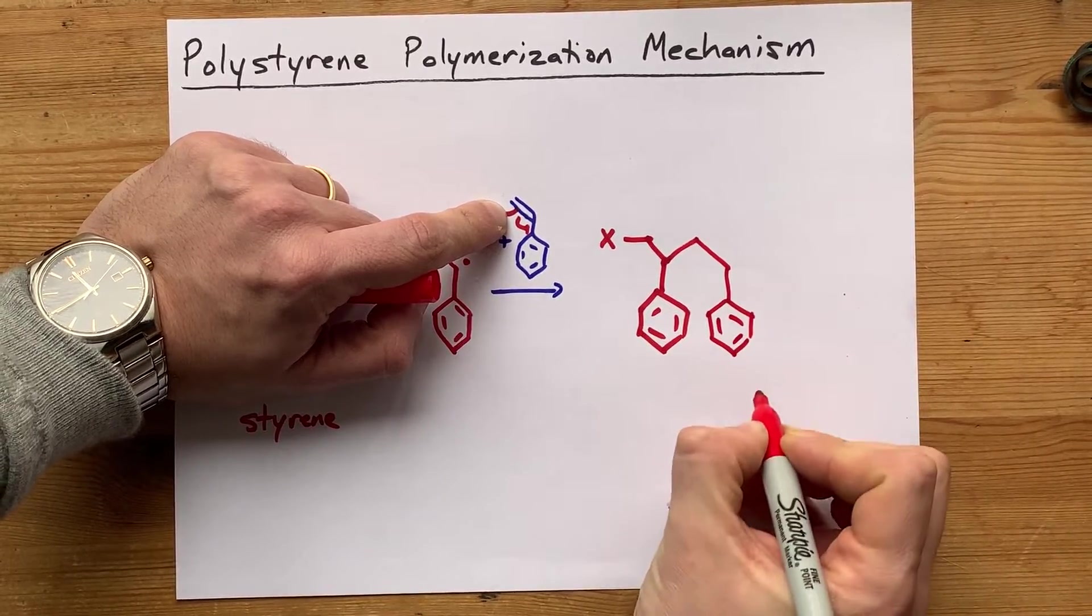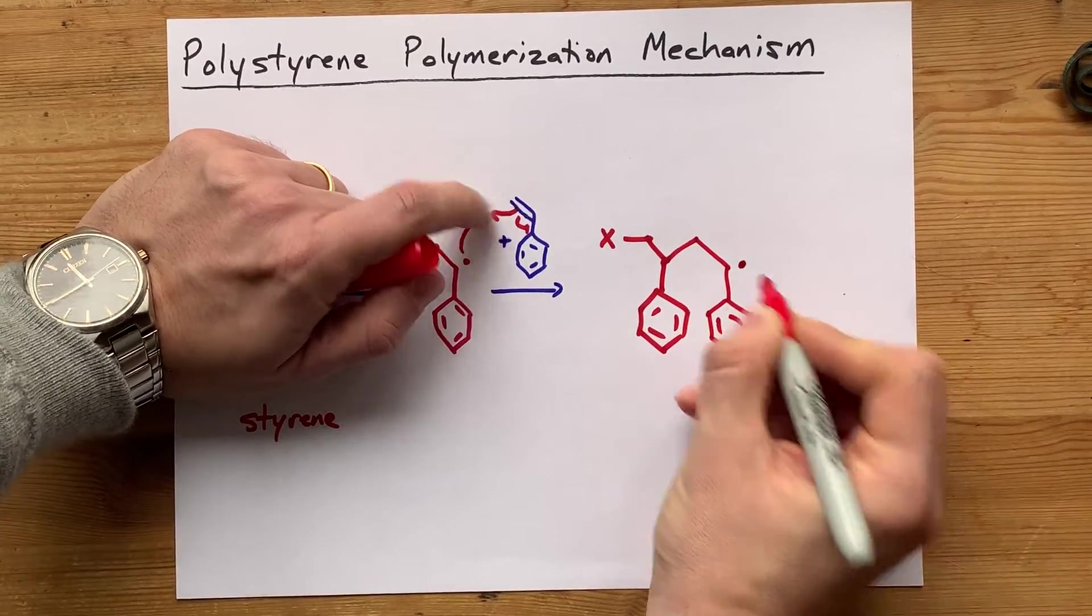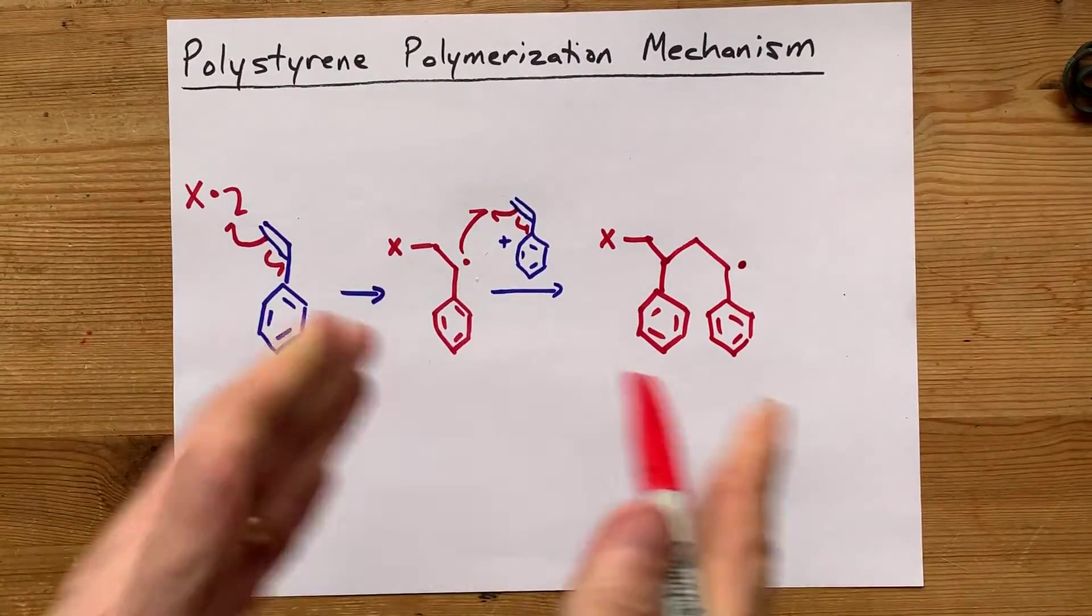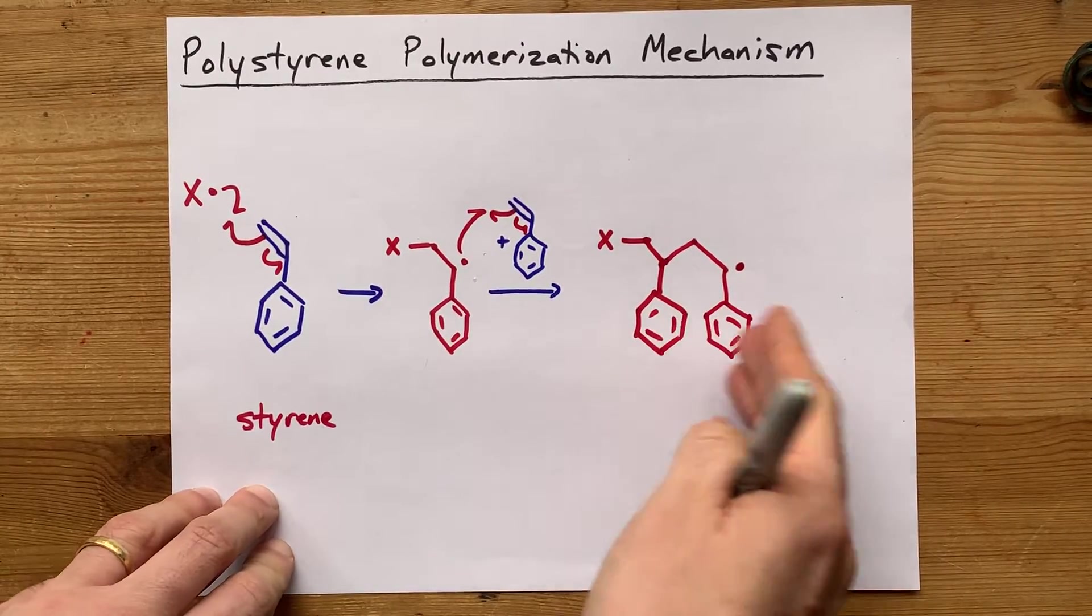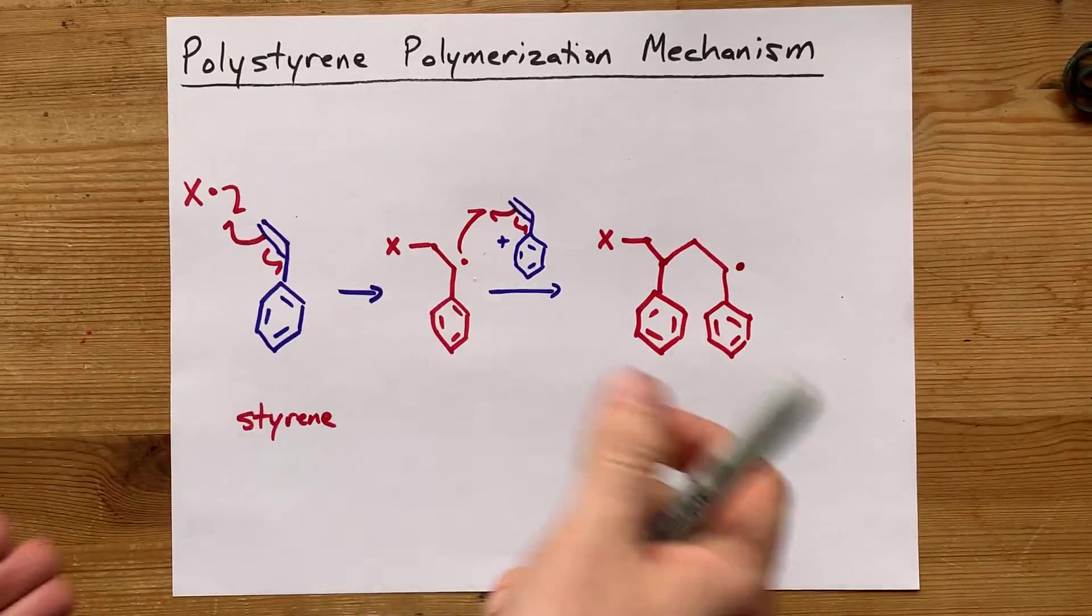You can probably see where we're going with this. And now we have a free radical here. We can add on another styrene and another styrene over and over and over until we run out of monomer.